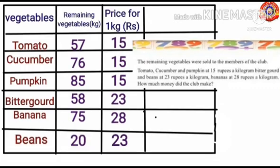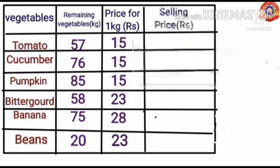Next, write the selling price of these vegetables per kilogram: Tomato — Rs. 15. Cucumber — Rs. 15. Pumpkin — Rs. 15. Bitter gourd — Rs. 23. Banana — Rs. 28. Beans — Rs. 23. Next, find the selling price of all these vegetables.